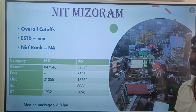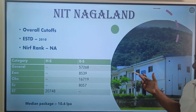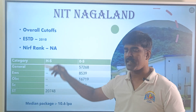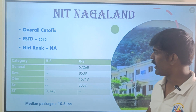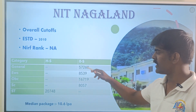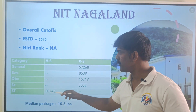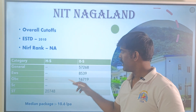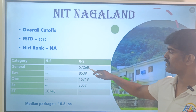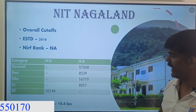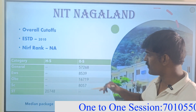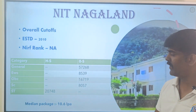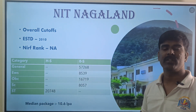The last NIT — general is 57,000 (outside state and home state both noted). Home state is around 6,000; outside state 57,000 for entry into this NIT. EWS 8,539; OBC 16,000; SC 8,057.